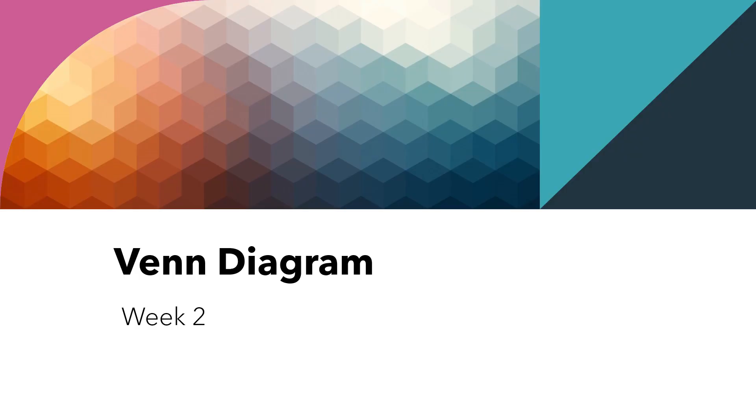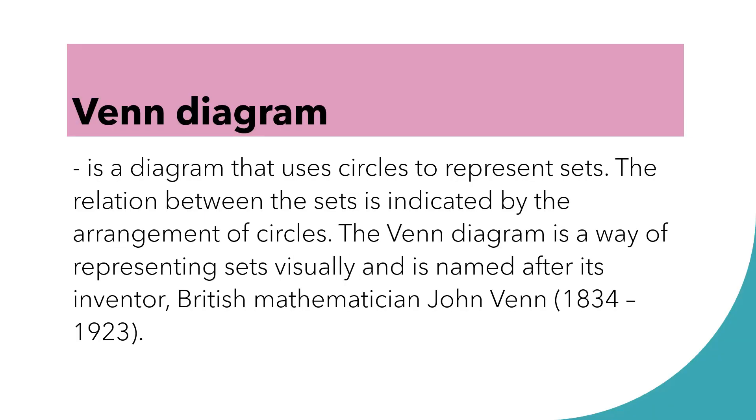Okay, good day everyone. Our topic for week 2 is Venn Diagram. Venn Diagram, by definition, is a diagram that uses circles to represent sets. The relation between the sets is indicated by the arrangement of circles. The Venn Diagram is a way of representing sets visually and is named after its inventor, British mathematician John Venn, from 1834 to 1923.